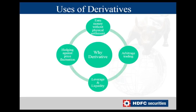Taking a quick recap: the first strength of derivatives is its rich load of data, readily available to all participants in the market to understand and analyze what the market might do tomorrow. The second advantage is hedging against price fluctuation. Other advantages include leverage and liquidity, arbitrage trading, and the ability to make money without physical settlement since in India everything is on cash settlement.